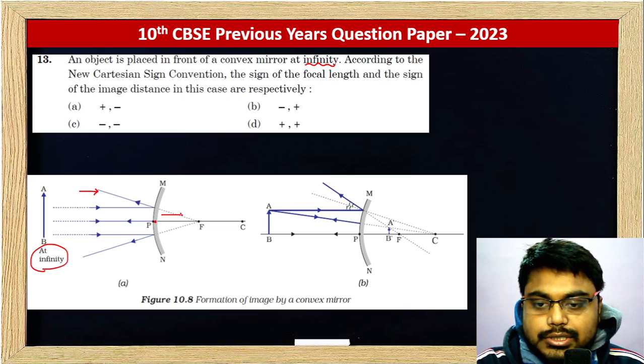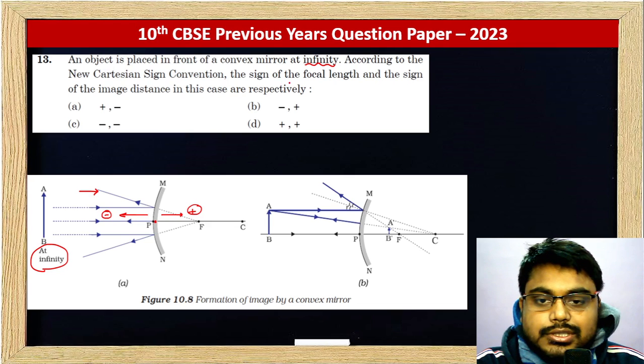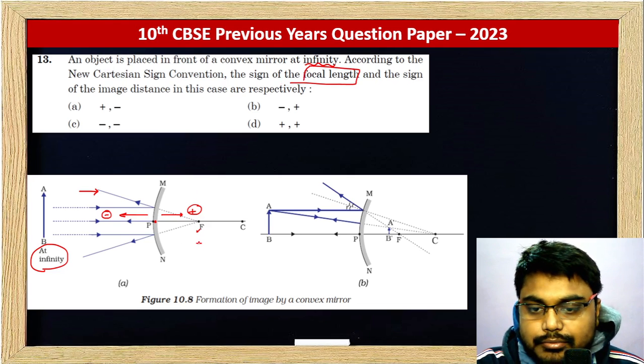From the pole, this is positive which is the direction of incident light, and this is negative. So the sign of the focal length - focal length focus here - focal length is positive.